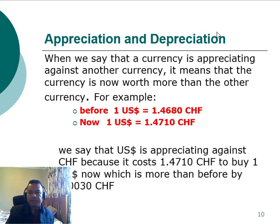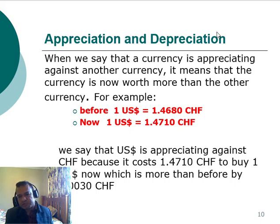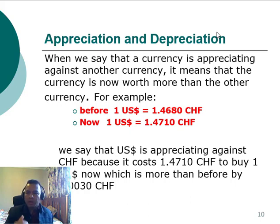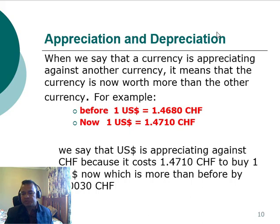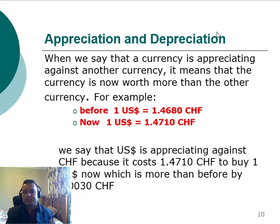For the multinational corporation, dealing with different currencies means always having to deal with the appreciation and depreciation of currency — how one currency moves against the base currency or another currency. For example, the Australian dollar has recently been depreciating against the US dollar. If you go back to around 2009, one Australian dollar was buying almost more than one US dollar, but by 2019, one Australian dollar was buying only around 65 to 70 US cents.